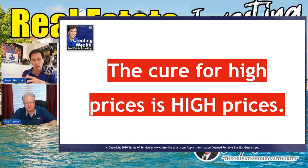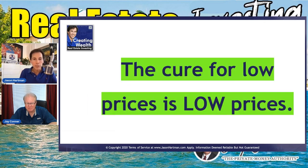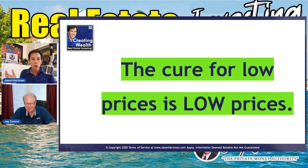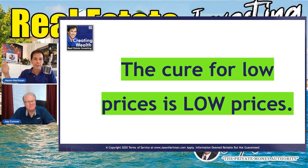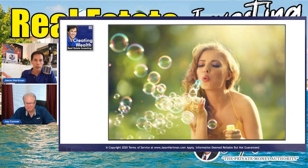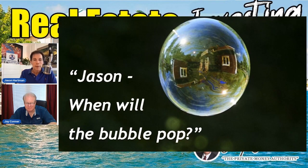There's an old saying in economics: the cure for high prices is high prices. One interpretation is that when prices are high, demand falls off and prices come down — the basic rule of supply and demand. The corollary is: the cure for low prices is low prices. If prices are too low, the market discovers that, starts buying everything up, and sellers raise prices. This is how the market constantly regulates itself. And as I mentioned, the most common question on people's minds right now is: are we in a bubble, and if so, when will it pop?